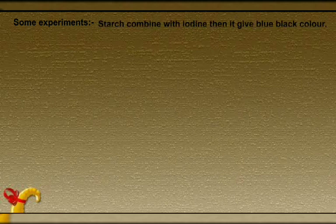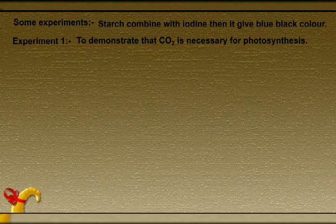Now some experiments. One important thing before starting: in photosynthesis, the formation of glucose is C₆H₁₂O₆, but later that glucose is stored in the form of starch. In maximum plants, starch is present, and when starch is combined with iodine it gives a blue-black color. Here is the first experiment: to demonstrate that CO₂ is necessary for photosynthesis.